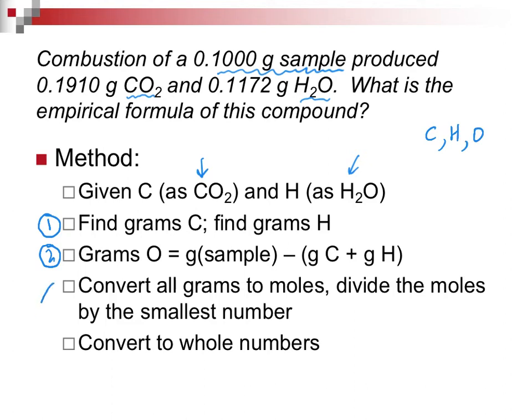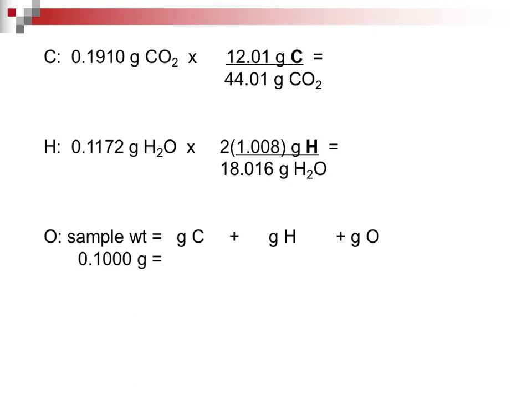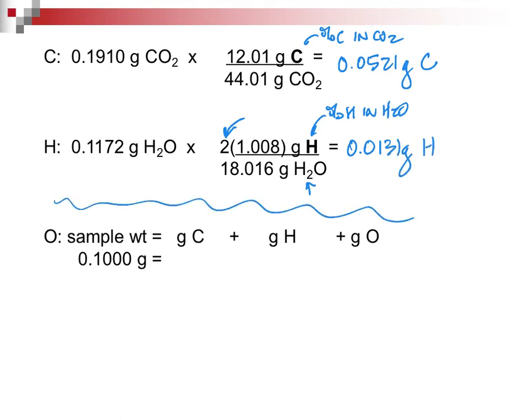Then you're going to do just what we've done before. Convert all the grams to moles. Divide the moles by the smallest number. Convert everything to whole numbers. Again, if we were in class, it would cover a blackboard. I could walk around. You could ask questions. Try our best here. So what I did is I started the problem. I converted my grams of CO2 by using the percent carbon in CO2 out of carbon dioxide. And when I do that, the value I get for my number is 0.0521 grams of carbon. I do the same thing for hydrogen. Notice the number two because it is the percent hydrogen in water, and there are two hydrogens in water. We come up with 0.0131 grams of hydrogen.